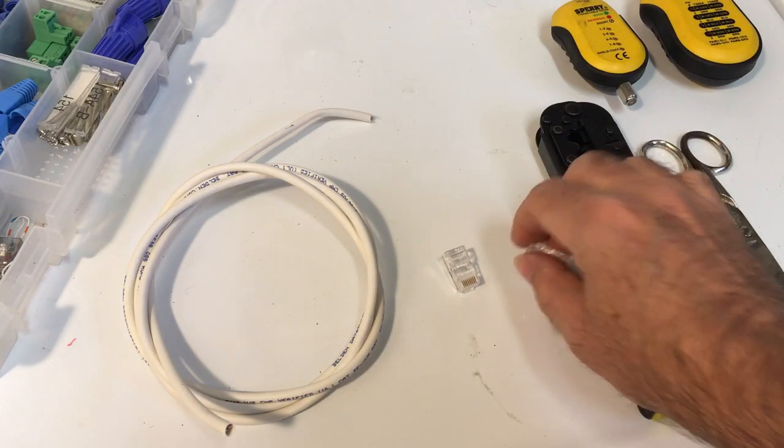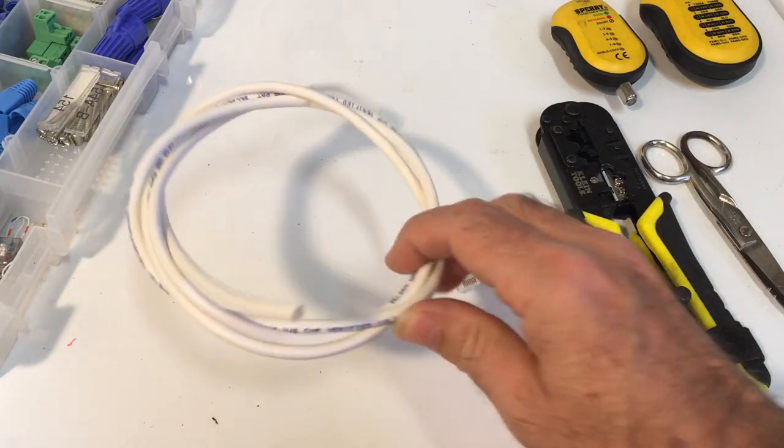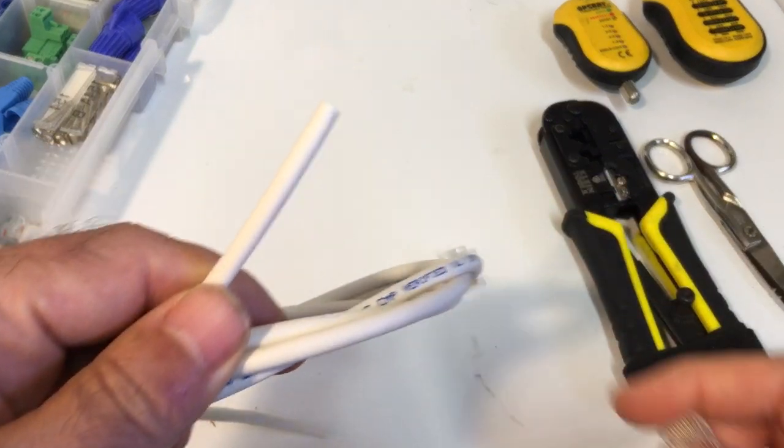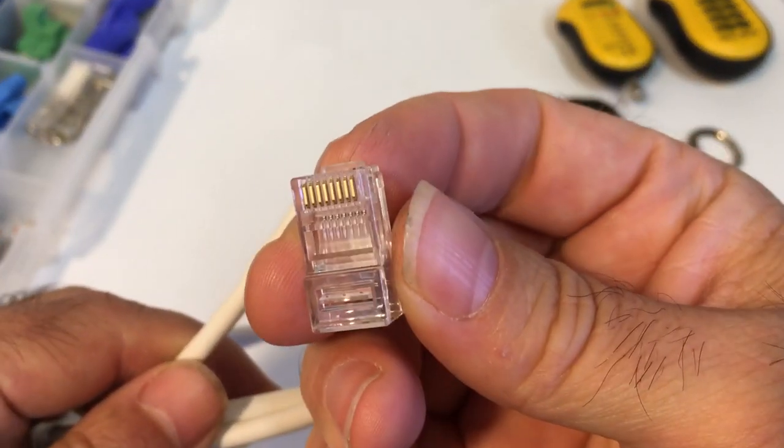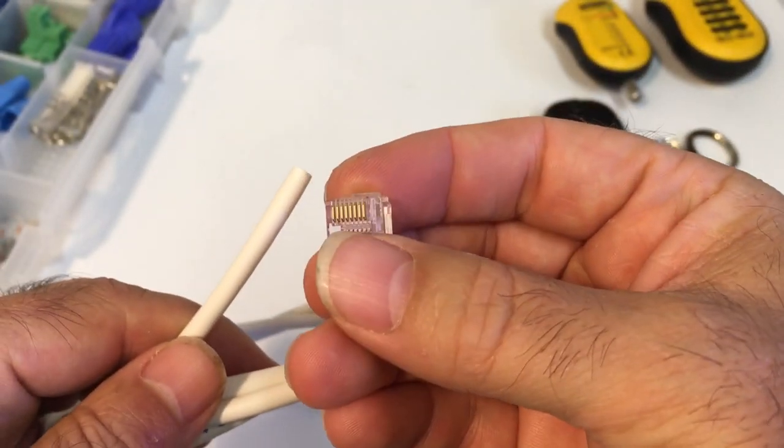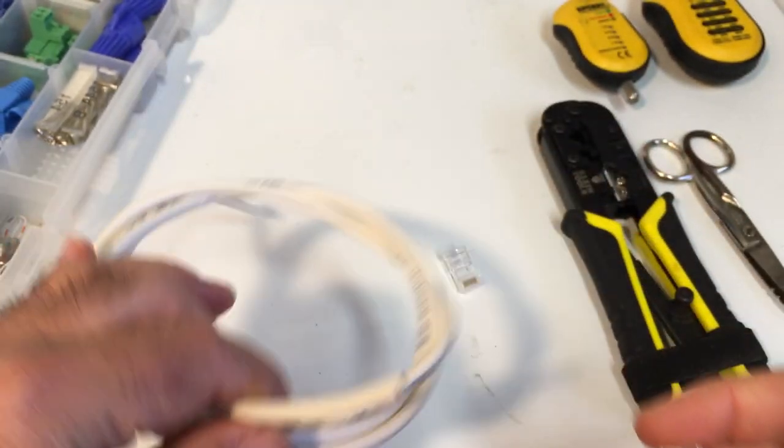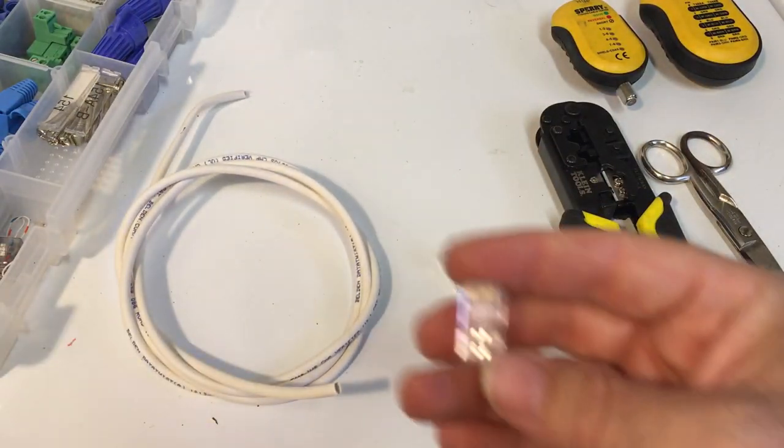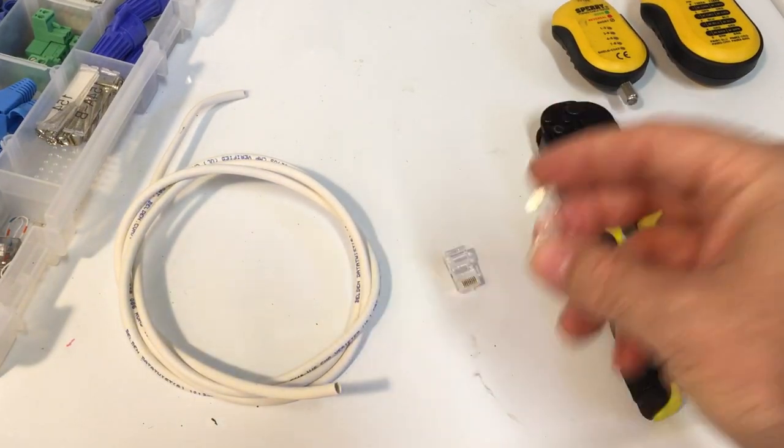Hi everyone, this video is about crimping a modular end onto a Cat5e cable. So you've got your Cat5e cable, got your modular end with the little eight gold pins in it. So what do we need? We need the cable, we need a couple of ends, or at least one end.